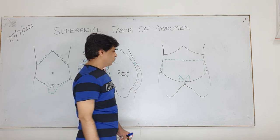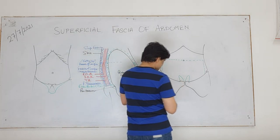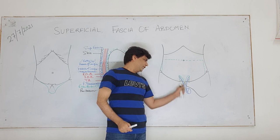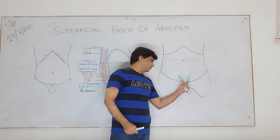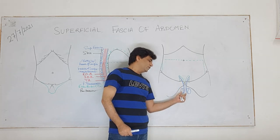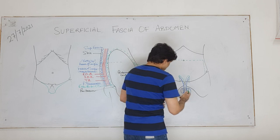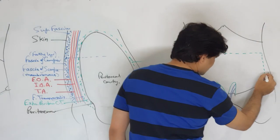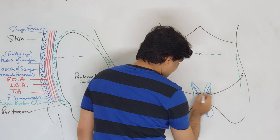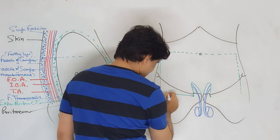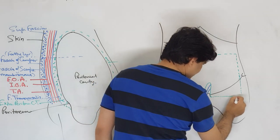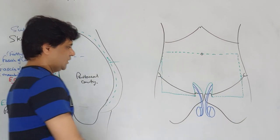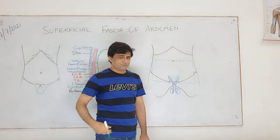From the superficial inguinal ring, the spermatic cord descends. The extent of the superficial fascia - it continues down here and is attached to the pubic tubercle, from where it extends laterally on both sides, then merges with the deep fascia. Below the inguinal ligament, it is fascia lata.